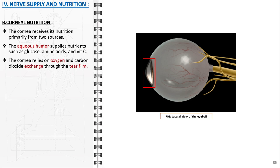Additionally, the cornea relies on oxygen and carbon dioxide exchange through the tear film. Oxygen dissolves in the tears and diffuses through the epithelium to reach the corneal cells, while carbon dioxide produced by the cornea is expelled out through the same route. This dual system of nourishment and gaseous exchange is crucial because the cornea is avascular, meaning it lacks its own blood vessels. This avascularity is essential for maintaining corneal transparency and optimal vision. Therefore, the balance of nutrients and gases through the aqueous humor and the tear film is vital for corneal health and function.